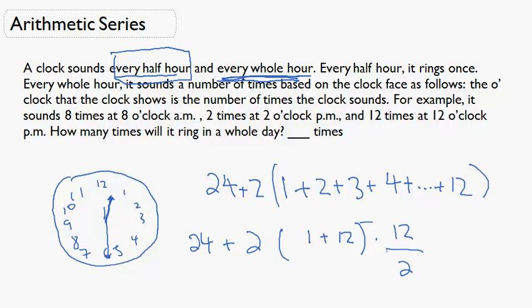So that is equal to 24 plus 2 times (1 + 12) times 12 divided by 2, which is 24 plus 2 times 13 times 6, which equals 24 plus 156.